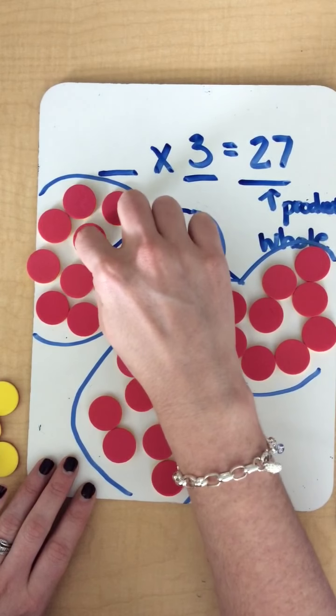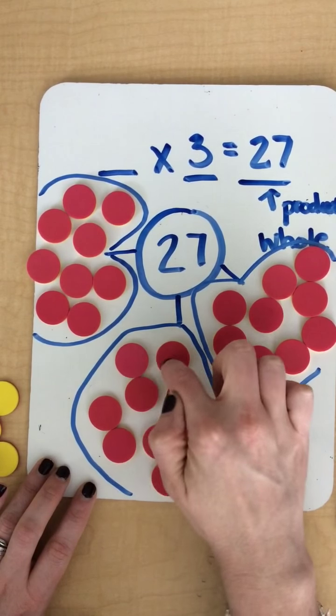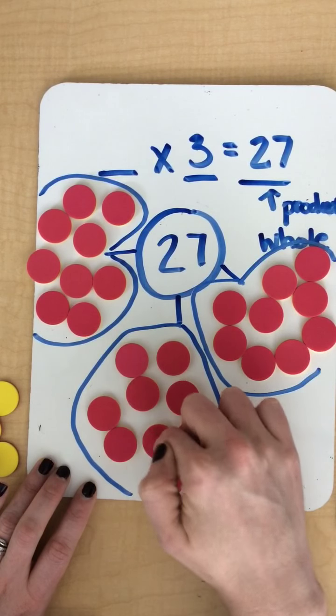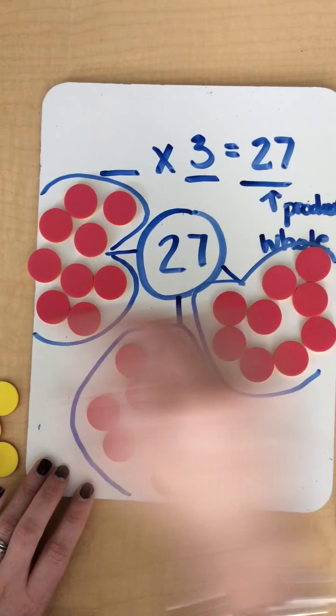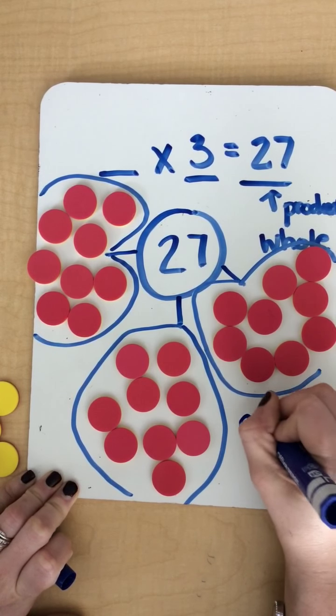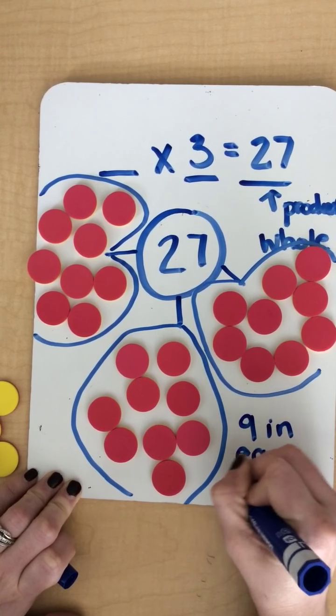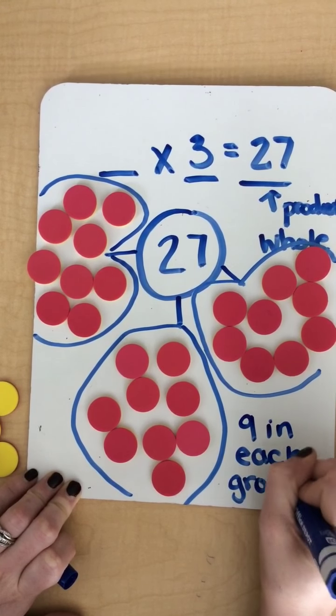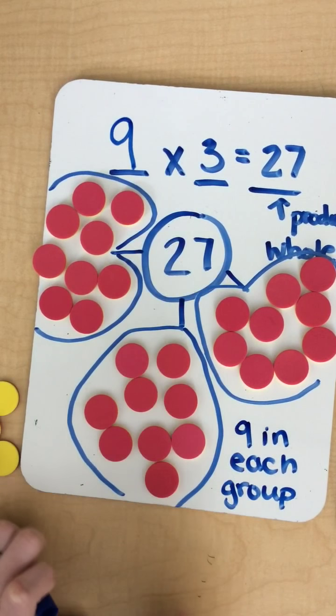1, 2, 3, 4, 5, 6, 7, 8, 9. And 1, 2, 3, 4, 5, 6, 7, 8, 9. So I notice that equally I have shared out nine in each group. So that's my unknown factor. So I would write nine here at the top.